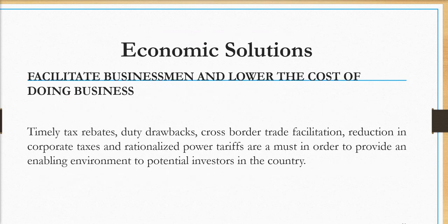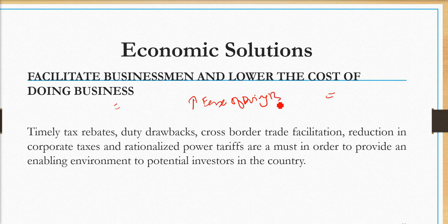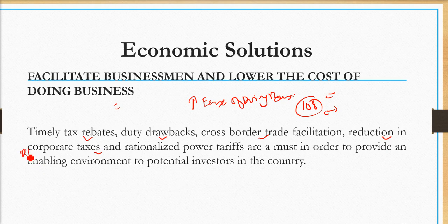Another solution could be to facilitate businessmen and lower the cost of doing business, which will lead to improvement in ease of doing business ranking — please quote the recent figures so your answer is more accurate when writing essays. This includes tax rebates, duty drawbacks, cross-border trade facilitation, reduction in corporate taxes — which is currently 29 percent, very high — and power tariff reductions in an investor-friendly environment.